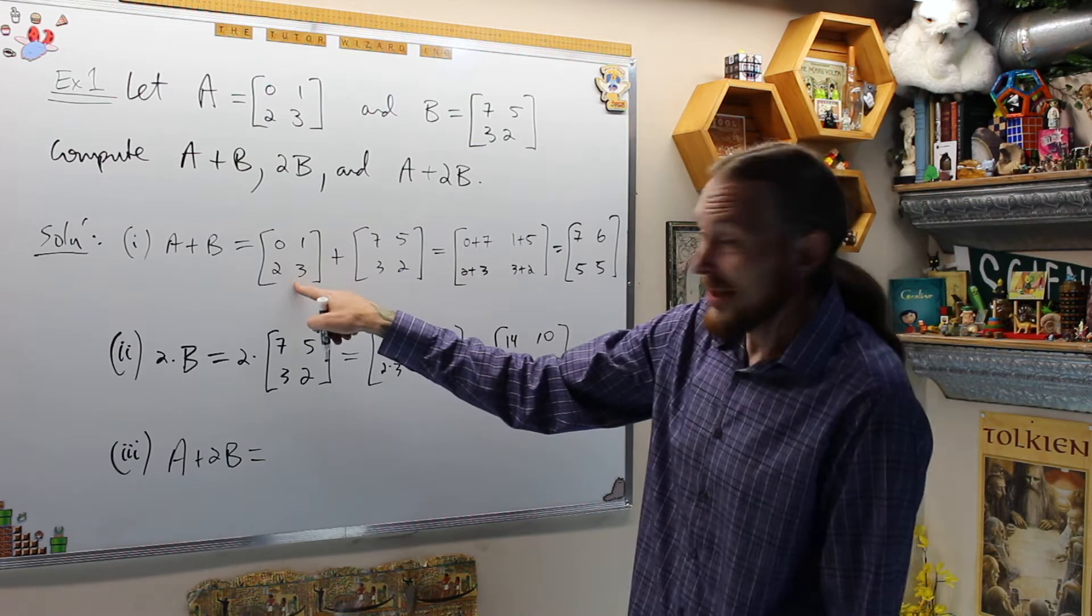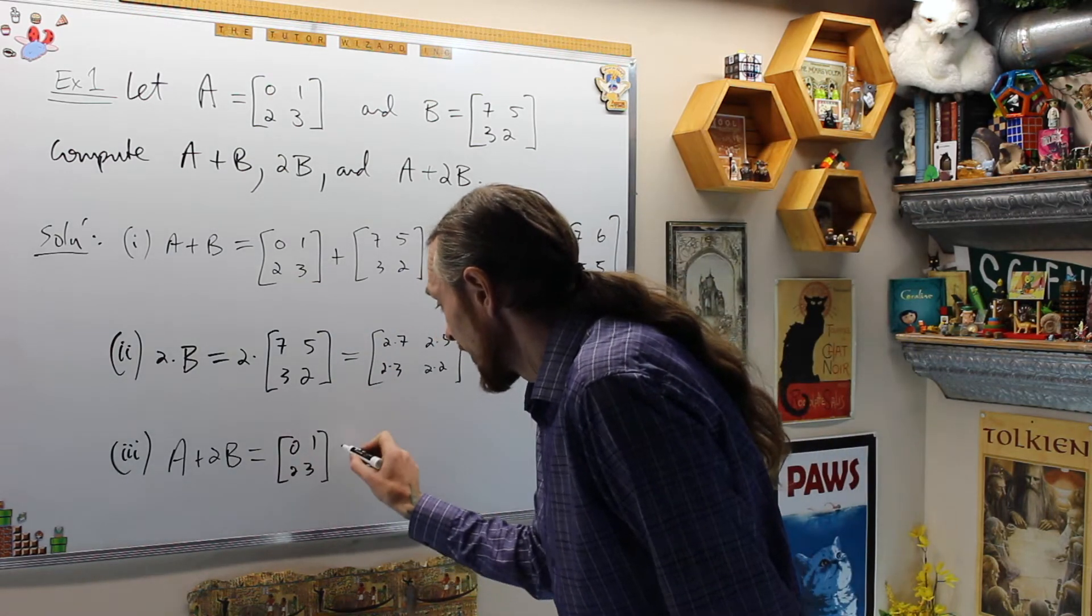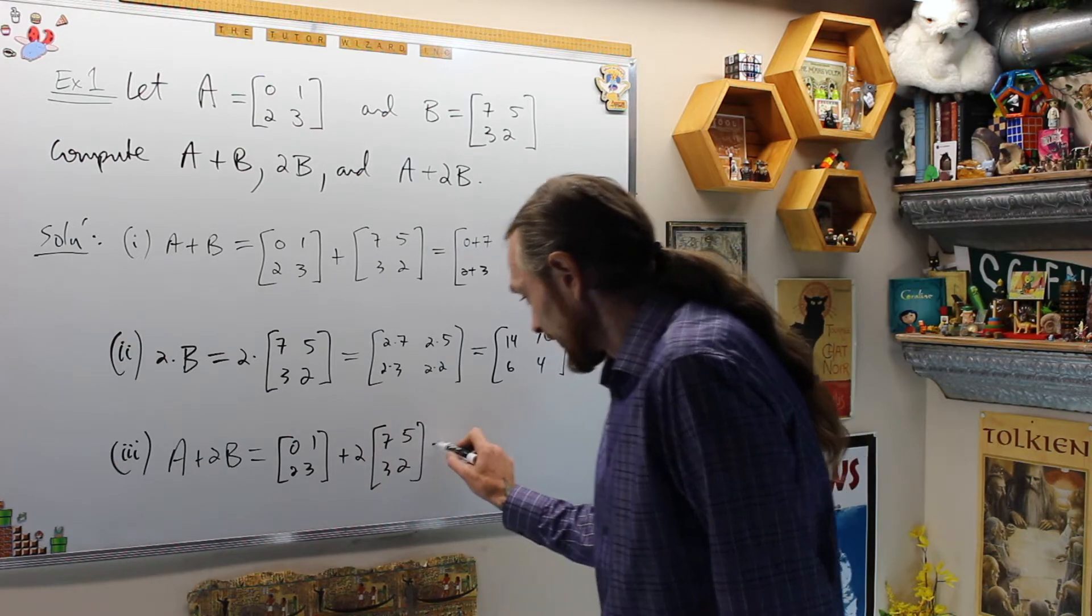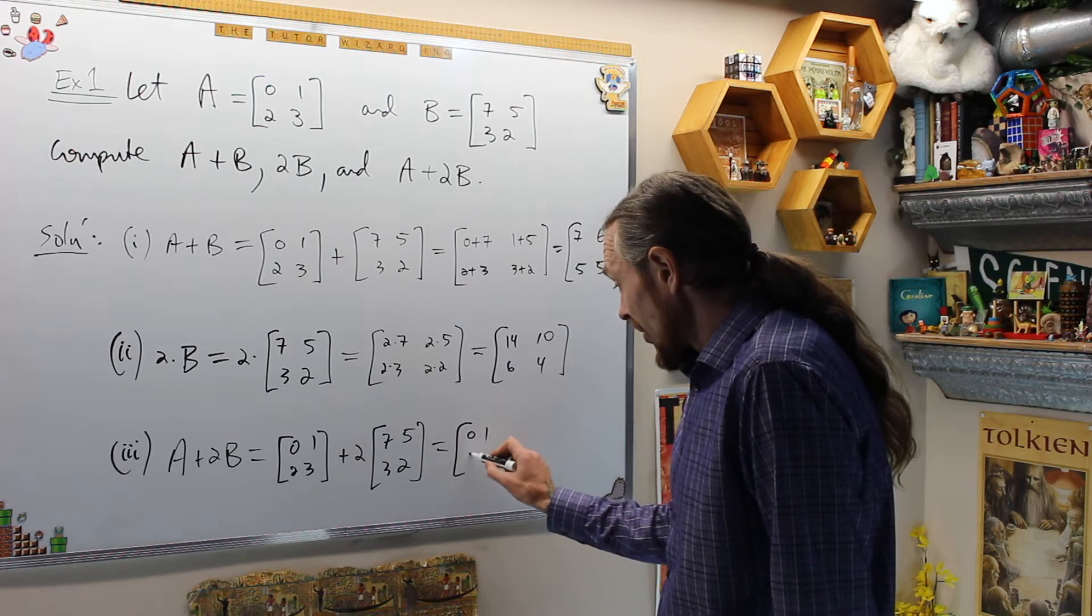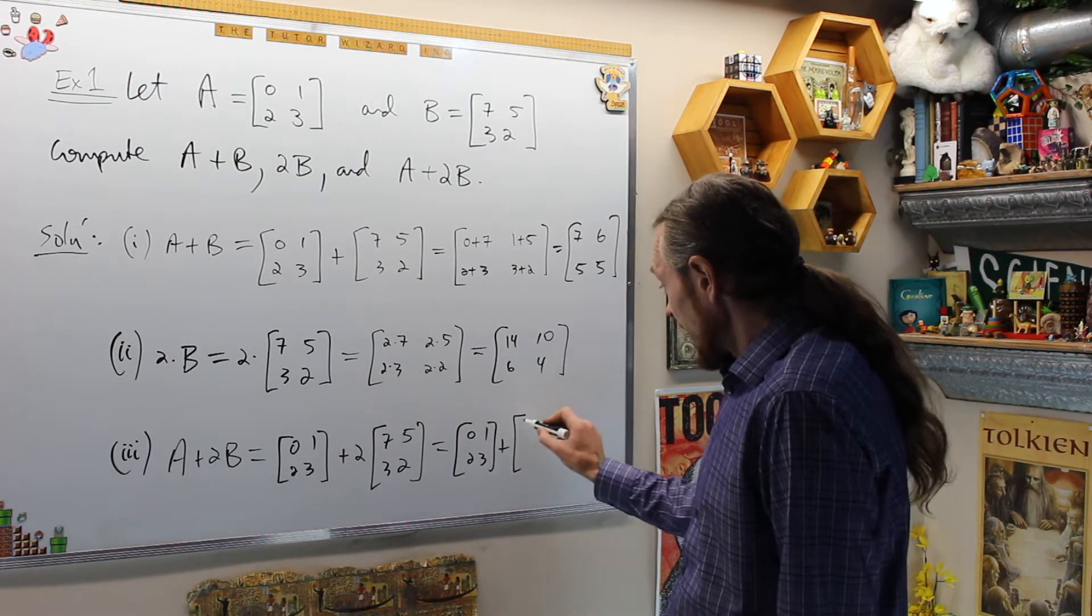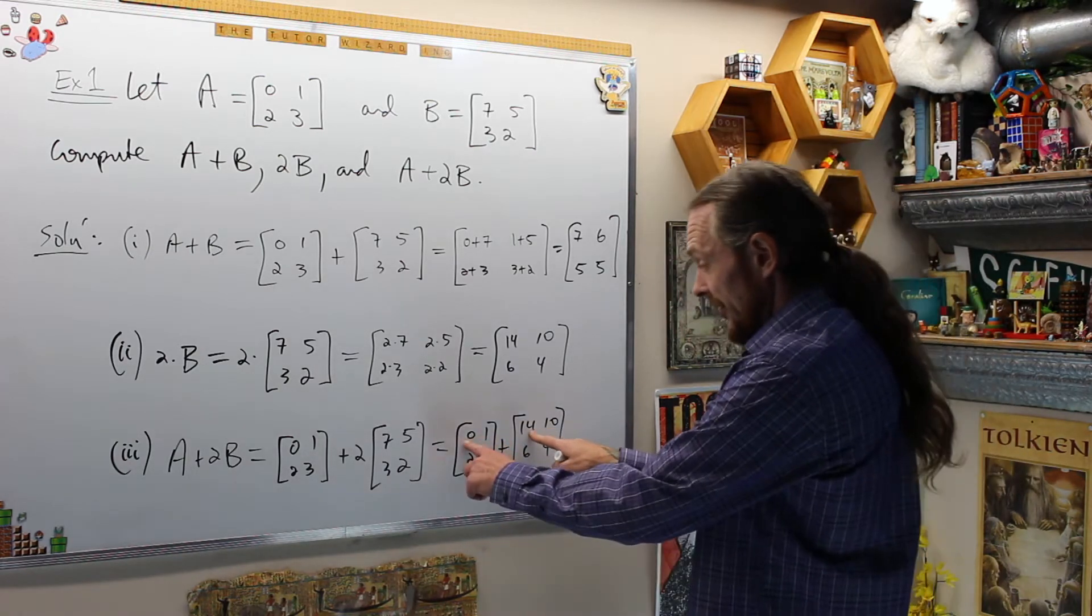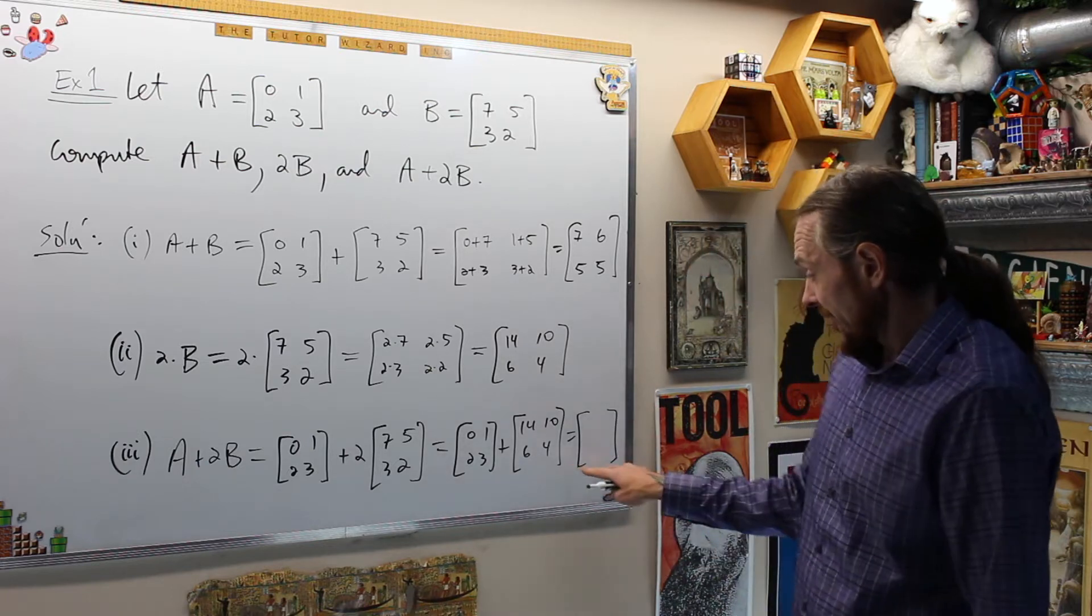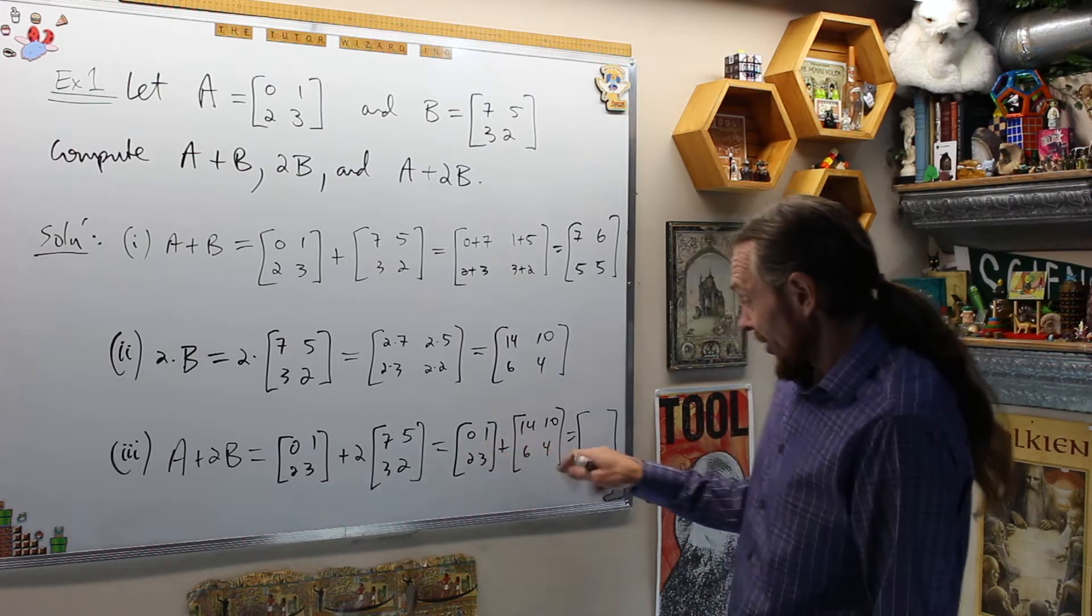Now when we want to start doing some more complicated algebra with this, we have A+2B equals what? Work smart, not hard. I already know what A is. That's [0,1; 2,3] plus 2×[7,5; 3,2] which equals, I've already computed that is what I'm saying, that's [0,1; 2,3] plus this guy [14,10; 6,4]. And then when you see what you're doing, yes you're allowed to do it in your head.